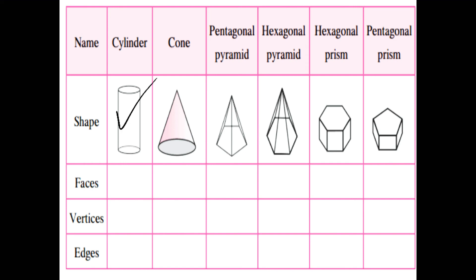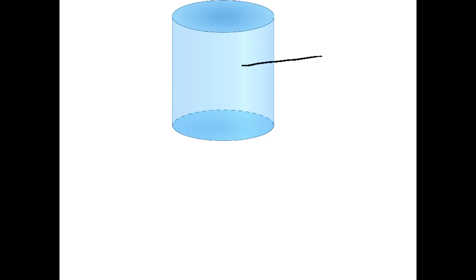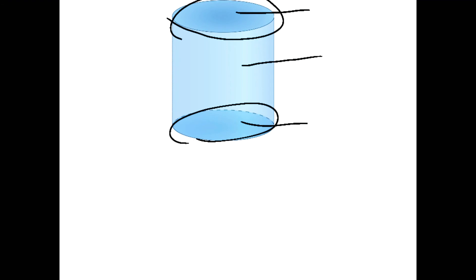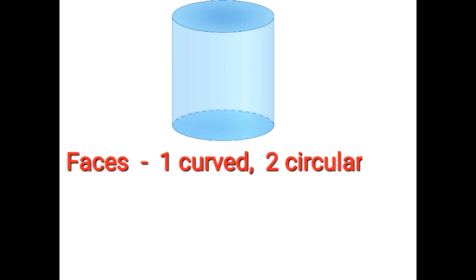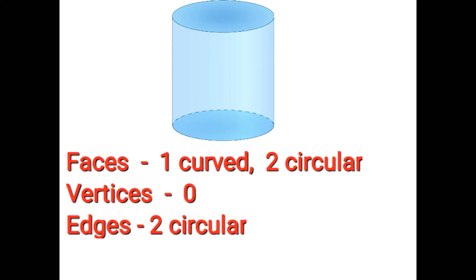First one is cylinder. You have 1 curved face, 2 circular faces and 2 circular edges. This is the circular edges. You don't have vertices on cylinder. Faces: 1 curved, 2 circular. Vertices: 0. Edges: 2 circular.